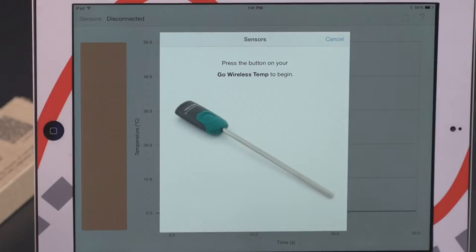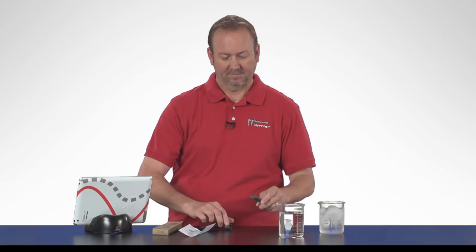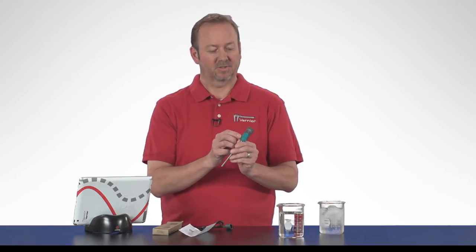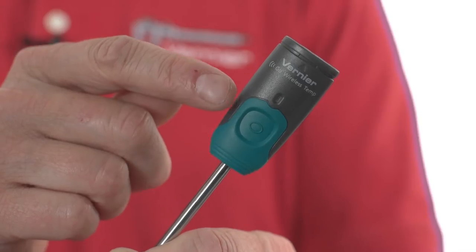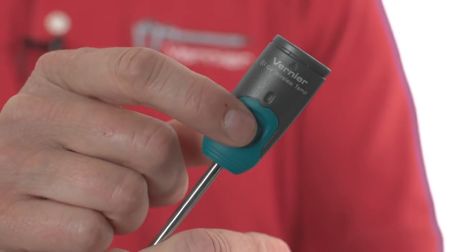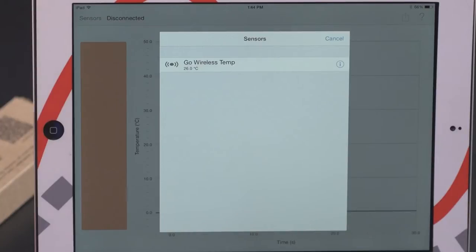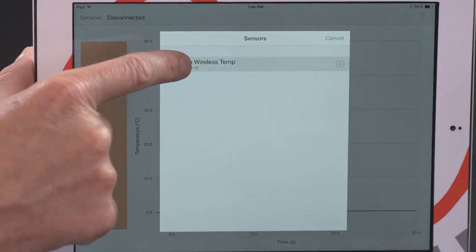It will begin by looking for a Go Wireless device. On your temperature sensor, it's very simple controls. There's a single button to turn it on and off, and an LED to show you when it's collecting data. So you want to turn that unit on. Now it sees the temperature sensor and we'll select it.